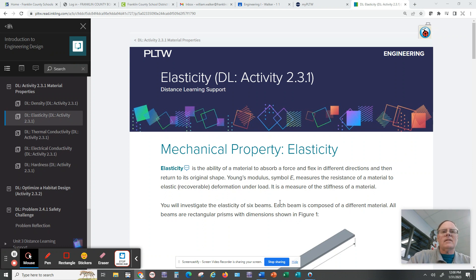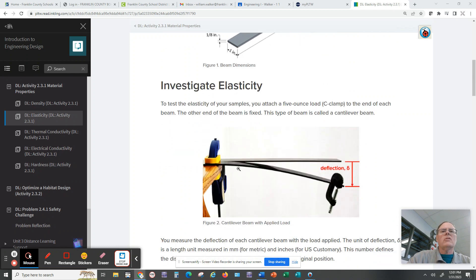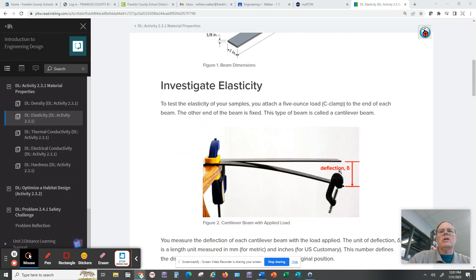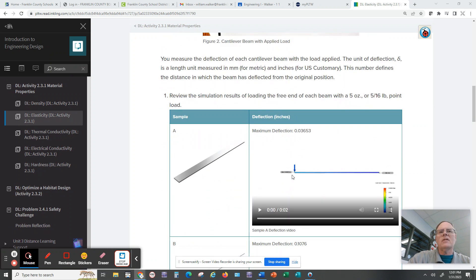That measurement of elasticity is the letter E. It's called the modulus of elasticity, and it's also called Young's modulus. So if you look at this assignment, they're giving you this really thin board, almost like a ruler. You're clamping it here and they're bending it down.